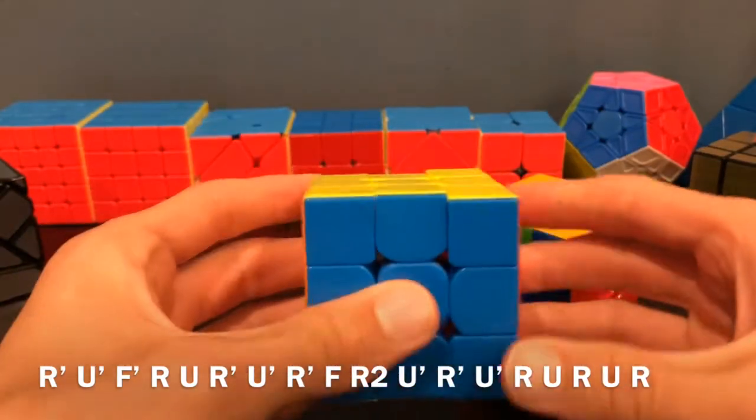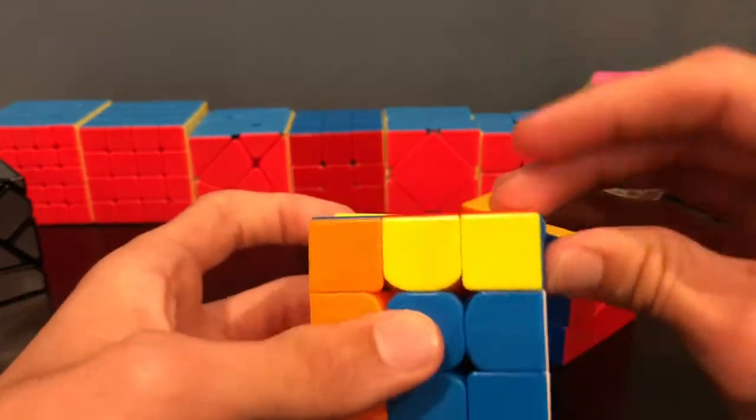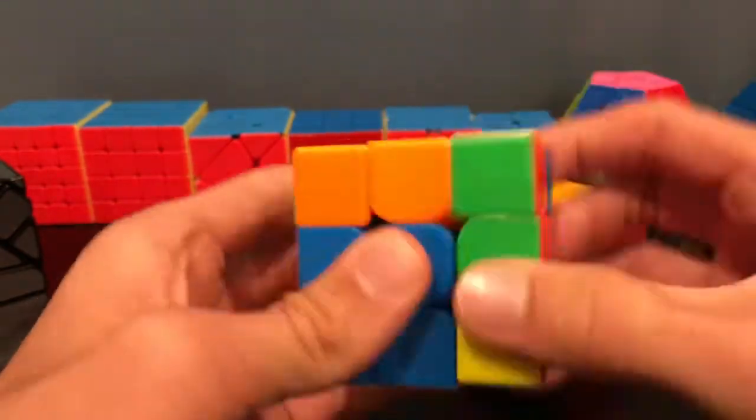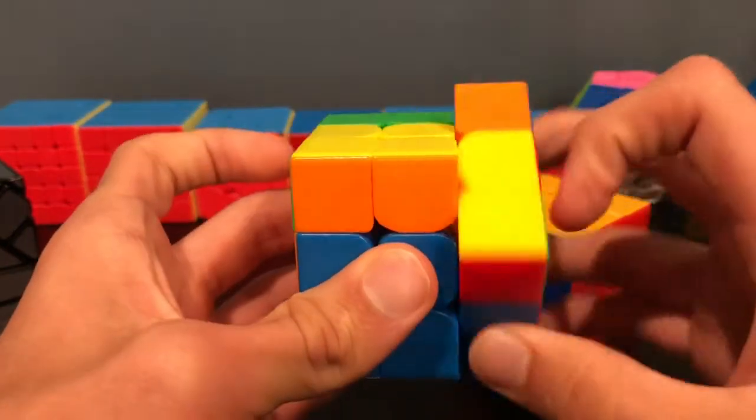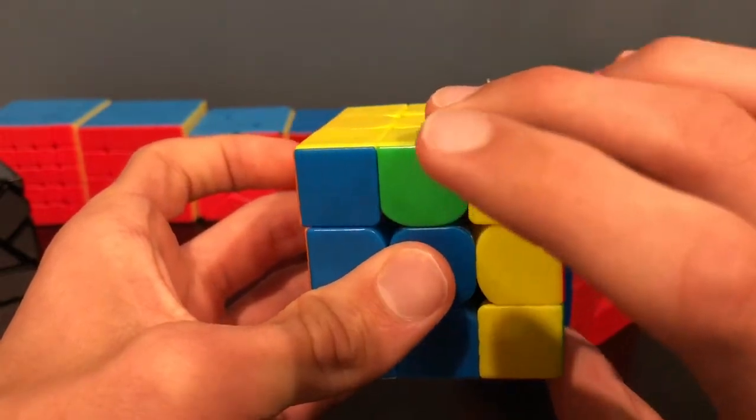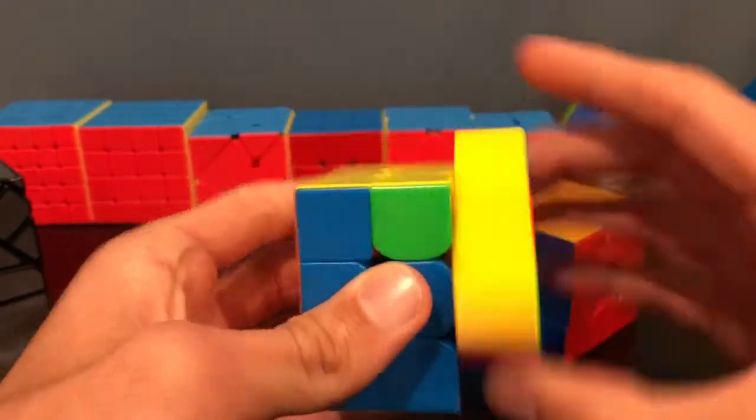Great. So in review, setup moves, T-perm, and then insert that F2L pair, and that's the F-perm algorithm.